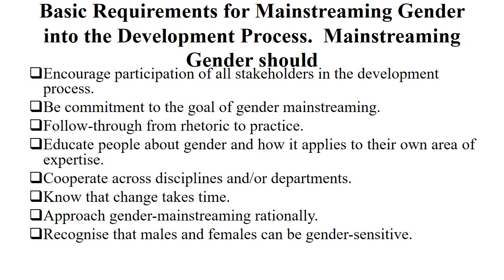The basic requirements for mainstreaming gender into development processes are: first, mainstreaming gender should encourage participation of all stakeholders — whether you are a teacher, student, or working for the university, everyone must participate. Second, be committed to the goal of gender mainstreaming — both men and females can answer questions, use any space, and sit anywhere. There must be equal participation, follow-through from rhetoric to practice, and education of people about gender and how it applies to their own area.